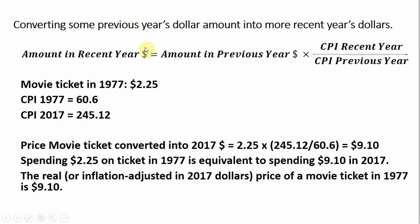The key formula in doing this is as follows. The amount in recent year dollars is going to equal the amount in some previous year dollars multiplied by the CPI — the Consumer Price Index — in the recent year, divided by the Consumer Price Index, the CPI, in the previous year.